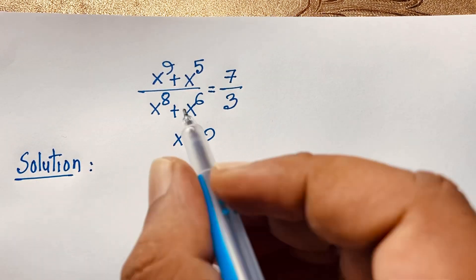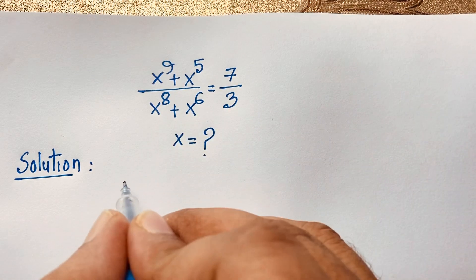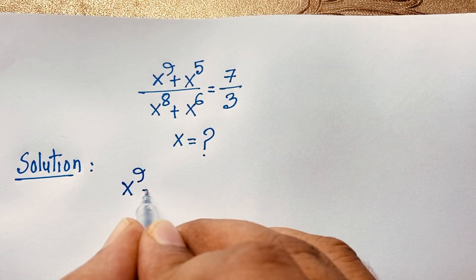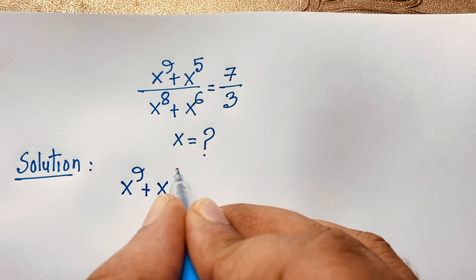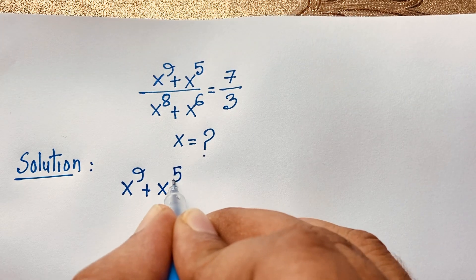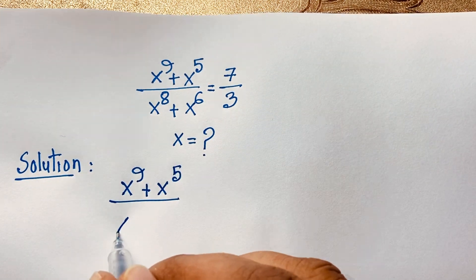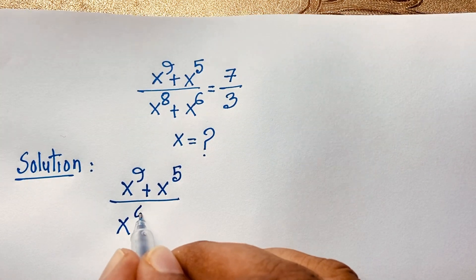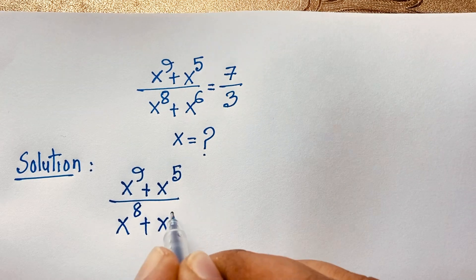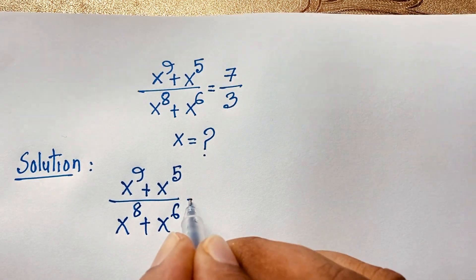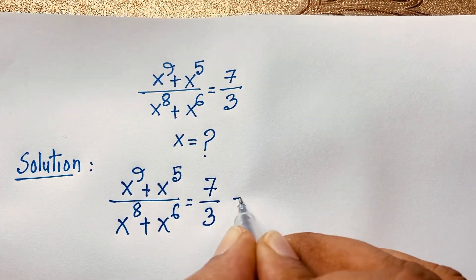Our question is x to the power 9 plus x to the power 5, over x to the power 8 plus x to the power 6, is equal to 7 over 3. This is our question.